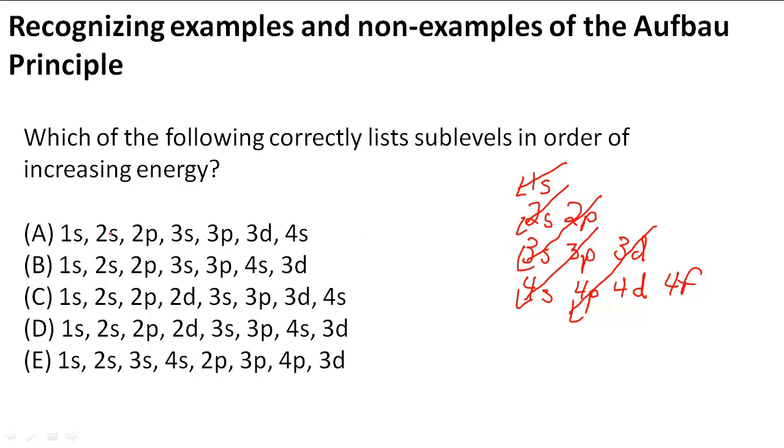A: 1s, 2s, 2p, 3s, 3p - so far so good - except here it says 3d in front of 4s, which is not what this diagram tells us. So A is out.